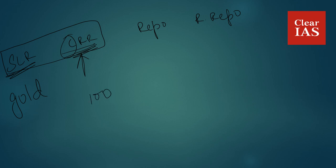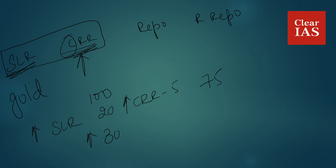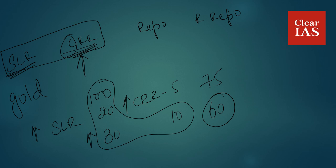Suppose the bank has 100 rupees and the SLR as fixed by the RBI is 20 and CRR is 5. After subtracting these values, the amount of money available from the banks to lend to the public is 100 minus 20 minus 5, that is 75. In the case of inflation, the RBI increases the value of the SLR as well as the CRR — say SLR is increased to 30 and CRR to 10. So the amount available for lending becomes 60 rupees. The amount in the hands of the public is reduced, demand for goods and services falls, prices fall, and inflation is kept in check.